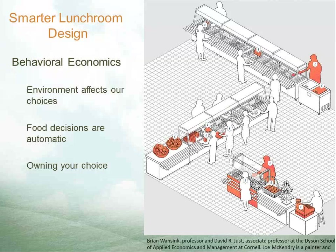We used BEN Center's research and resources through smarterlunchrooms.org to design and implement this project. SLD uses psychology to design an environment aimed at promoting healthier options and nudging an individual towards a particular choice, creating satisfaction about a decision — students really own it and are more likely to consume what they take. Things like displaying creative names with veggies increases selection by 40 to 70%. The first highlighted entree on the lunch line has an 11% advantage over the second option, and asking students simply "would you like a salad?" increased sales by 33%.